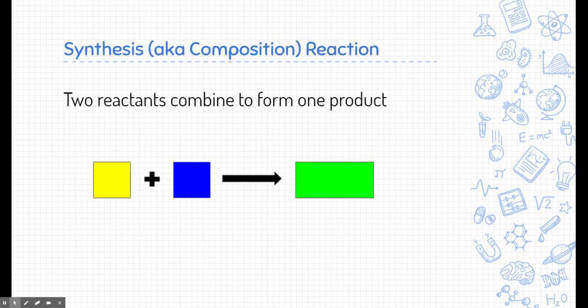Let's start with synthesis reactions. Another name for a synthesis reaction is a composition reaction, so you might see both of these names used synonymously in textbooks or online. In a synthesis reaction, we typically have two or more reactants that combine to form only one product — that's what composition or synthesis means. In this class, we're only going to focus on synthesis reactions where we start with two reactants.